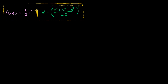In the last video, I claimed that the result we got for the area of a triangle with sides of length a, b, and c is equivalent to Heron's formula. What I want to do in this video is show that this is equivalent to Heron's formula by essentially just doing a bunch of algebraic manipulation.